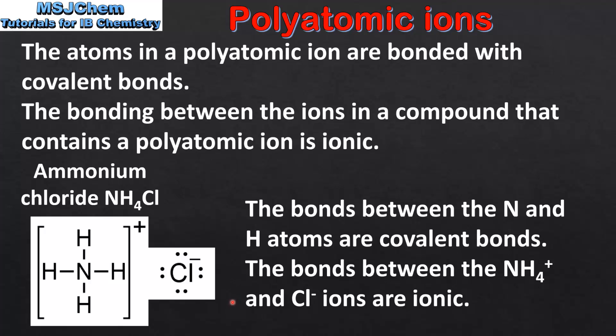So compounds that contain a polyatomic ion have two types of bonding. The bonding between the atoms in the polyatomic ion is covalent, but between the ions is ionic.